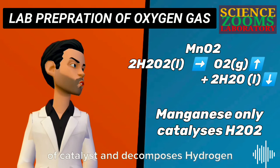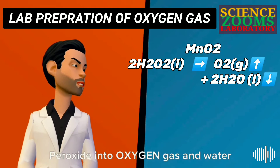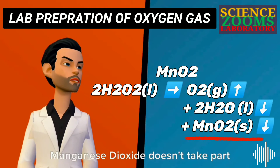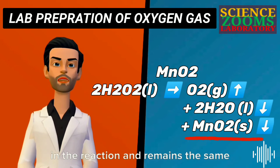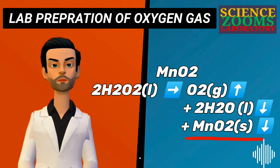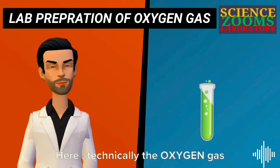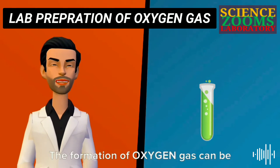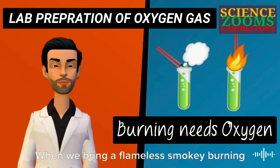Here, manganese dioxide plays the role of a catalyst and decomposes hydrogen peroxide into oxygen gas and water. Manganese dioxide doesn't take part in the reaction and remains the same. The oxygen gas is collected technically, and the formation of oxygen gas can be tested — it's very easy.